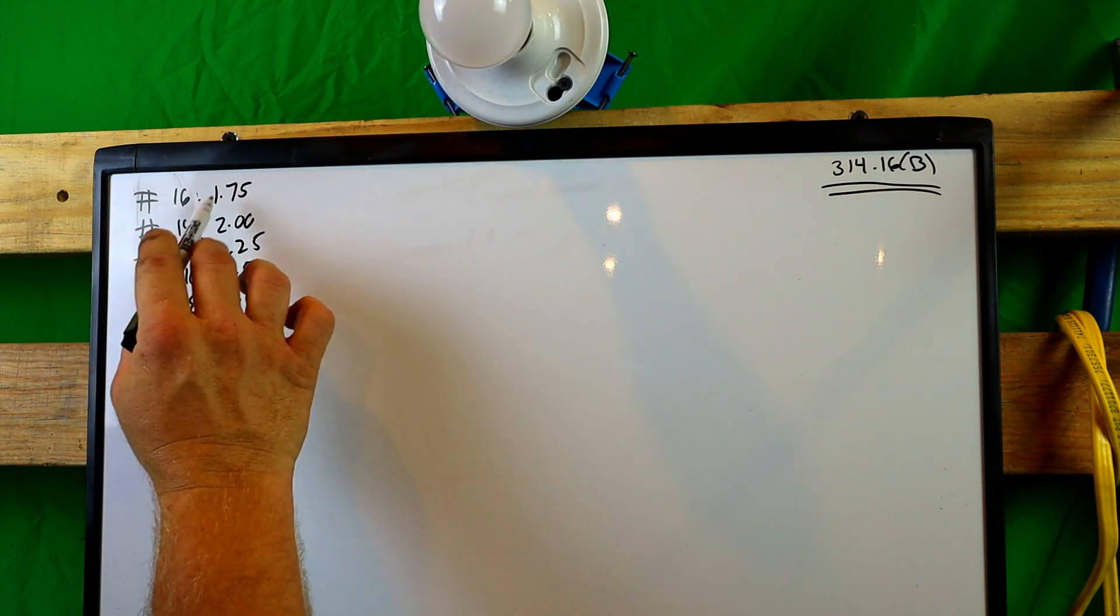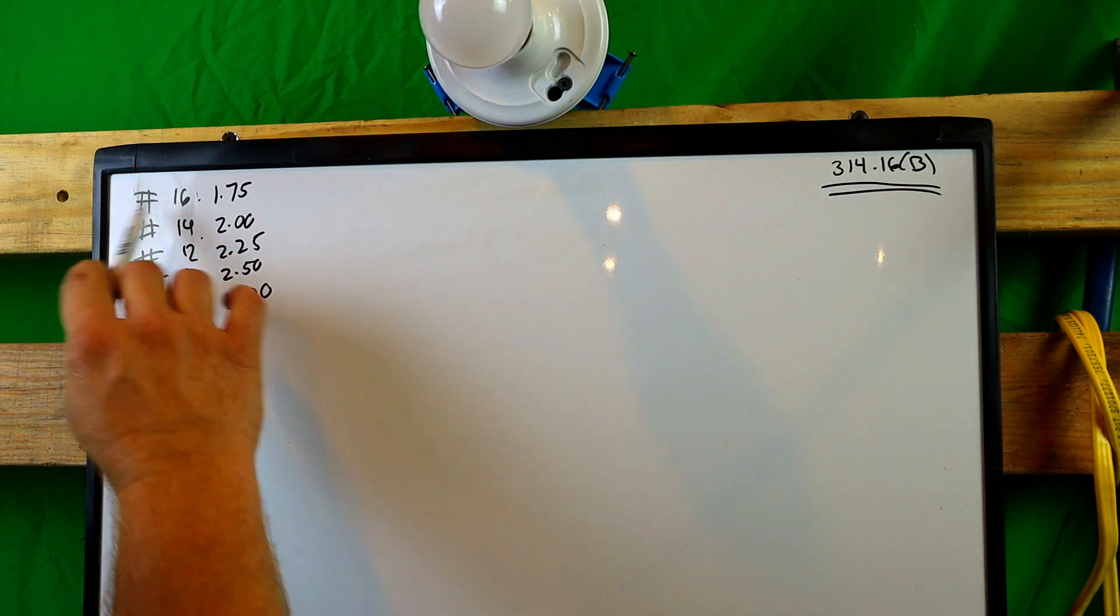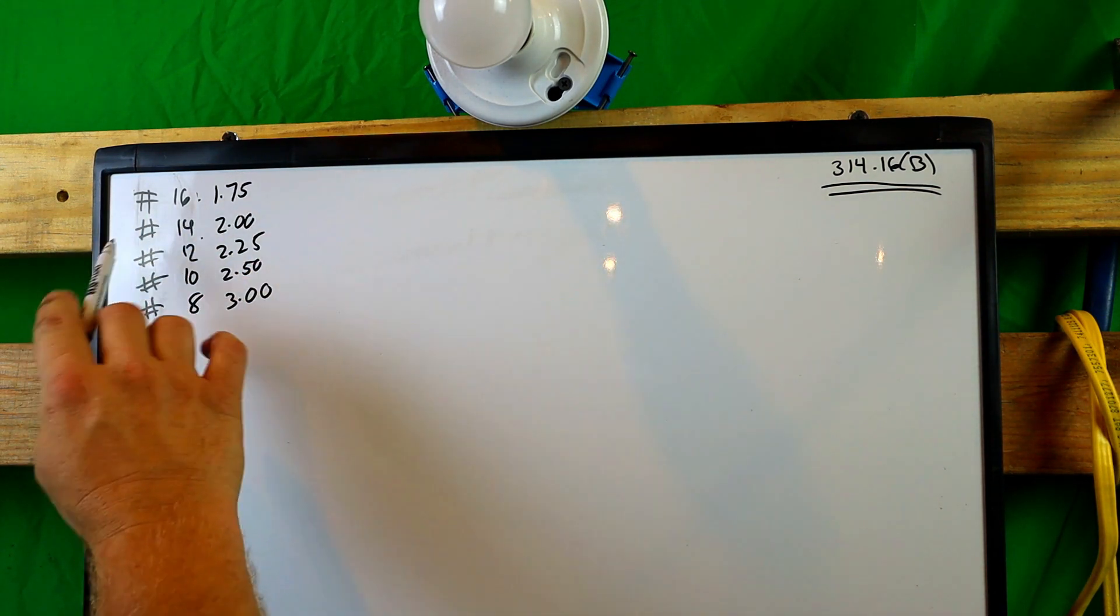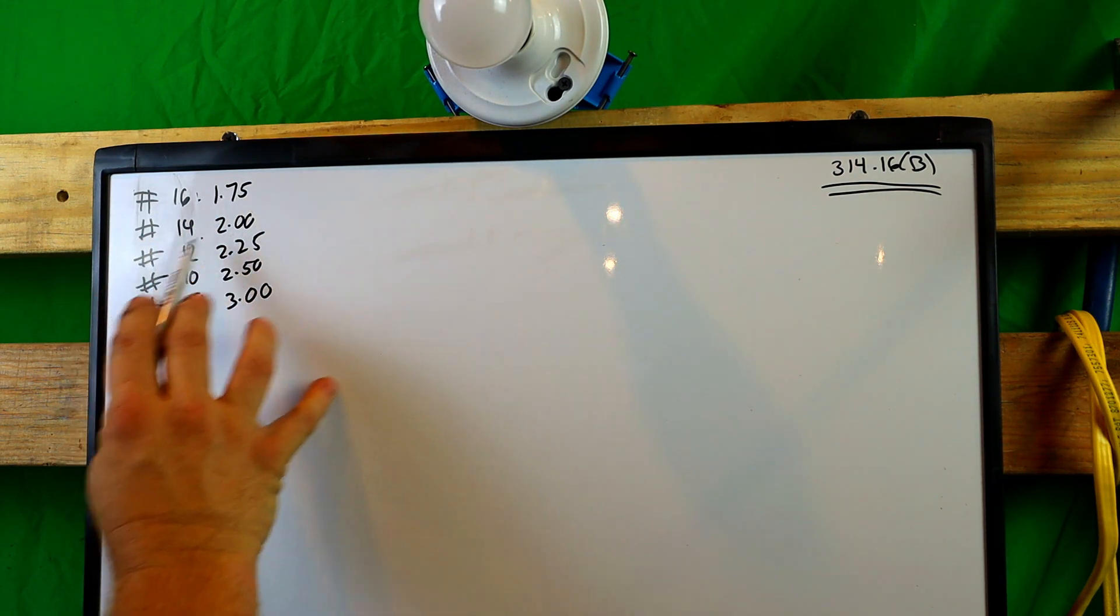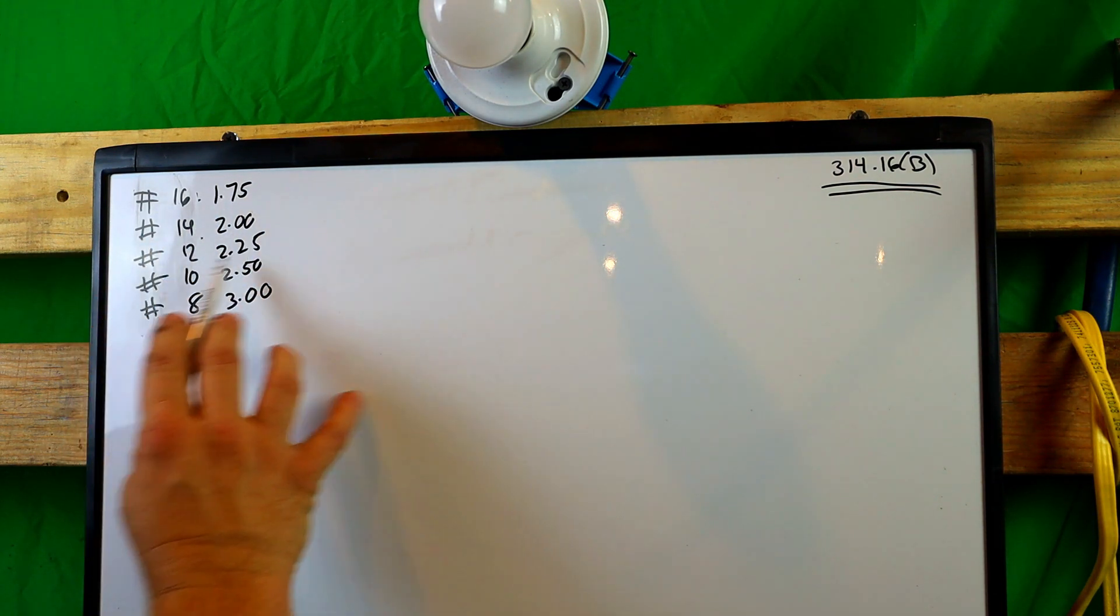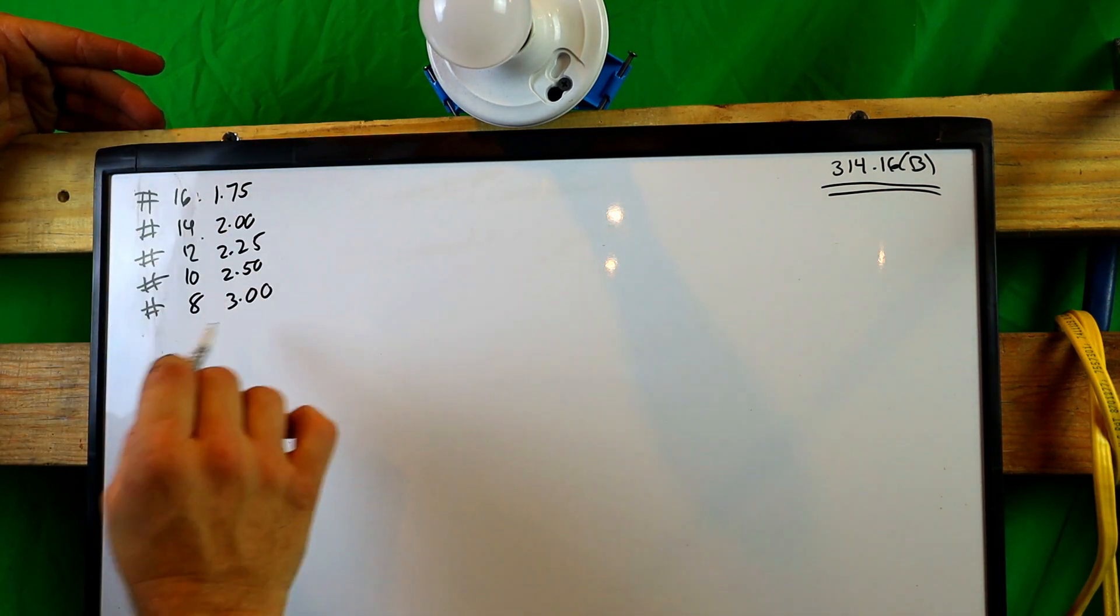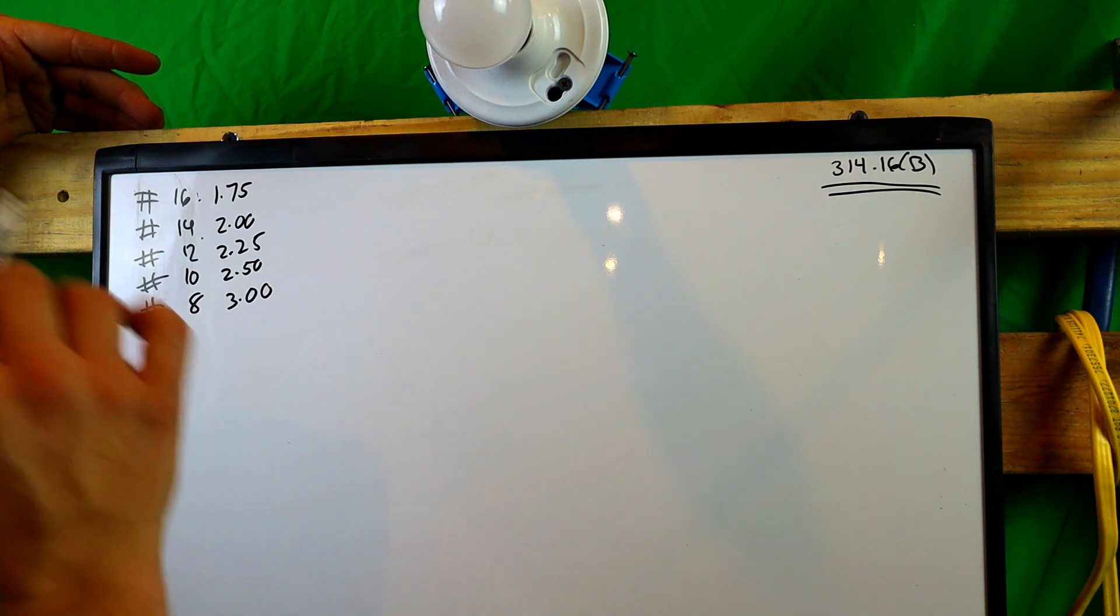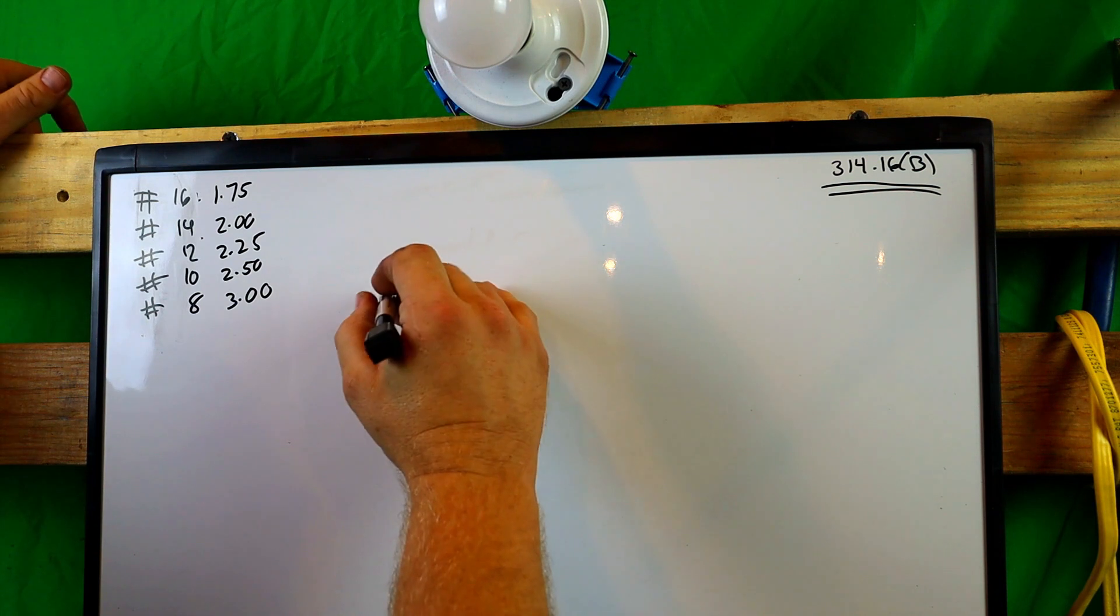Alright. So first things first, every wire has a size rating on it. Now this will all come into play eventually, but they've already had the size right here. So a 16 gauge wire is 1.75, 14 is 2, 12 is 2.25, 10 is 2.50, and 8 is 3.0. You got to know if your box, can you put all those wires in it?